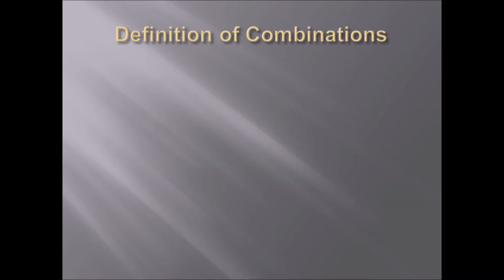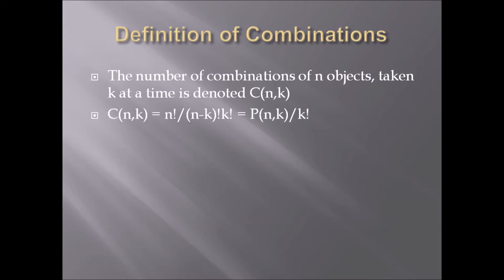Now, I want to define what a combination is. The number of combinations of n objects taken k at a time is denoted C(n,k). So n choose k equals n! / ((n-k)! × k!).